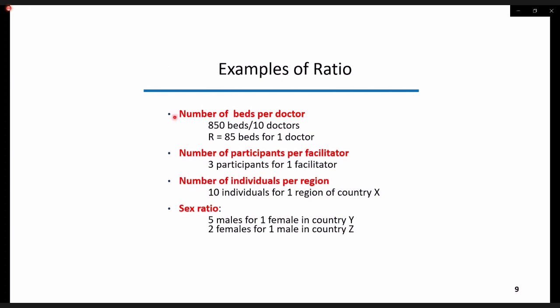More examples of ratio are shown here: number of beds per doctor, that is 85 beds for one doctor; number of participants per facilitator, that is 3 participants for one facilitator; number of inhabitants per region, that is 10 individuals for one region of country X; the male to female ratio, that is 5 males for one female in country Y; and the female to male ratio, that is 2 females for one male in country Z.